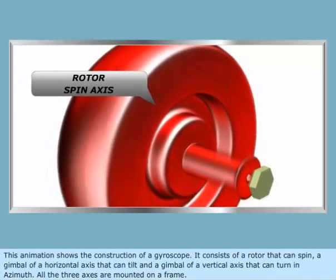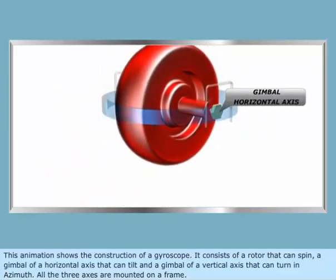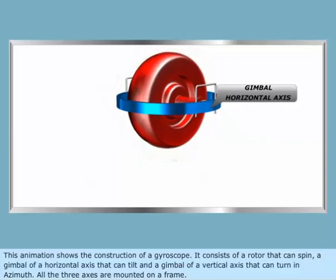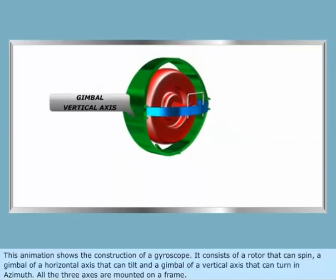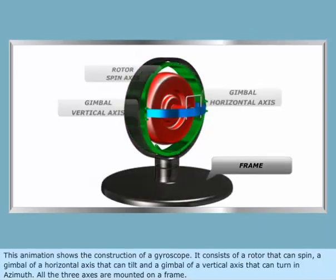This animation shows the construction of a gyroscope. It consists of a rotor that can spin, a gimbal of a horizontal axis that can tilt, and a gimbal of a vertical axis that can turn in azimuth. All three axes are mounted on a frame.